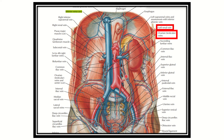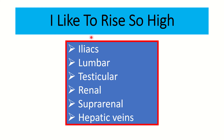The important veins that drain into the inferior vena cava are: common iliac vein, testicular or ovarian vein, lumbar vein, renal vein, and hepatic vein. Here is a mnemonic for the tributaries of the inferior vena cava: 'I Like To Rise So High' — I for Iliac, L for Lumbar, T for Testicular, R for Renal, S for Suprarenal, and S for Hepatic (Suprahepatic).